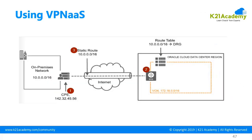In this VPN tunnel diagram, the left side represents your on-premise network and the right side represents Oracle Cloud Infrastructure. We've created a VCN with CIDR 172.16.0.0/16. On-premise, you have another network of 10.0.0.0/16. You create a dedicated VPN tunnel: one end connected to the CPE (customer premise equipment) and the other end connected to the DRG, which is attached to the virtual cloud network.